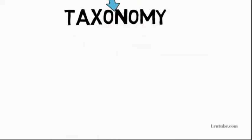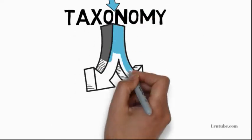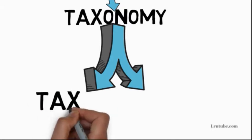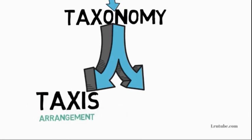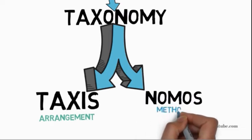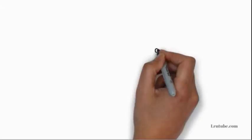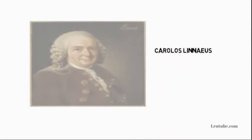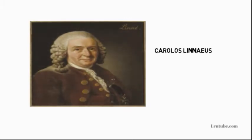In science, the practice of classifying organisms is called taxonomy, which comes from two words: taxis, meaning arrangement, and nomos, meaning method. Taxonomy is the method of arrangement.